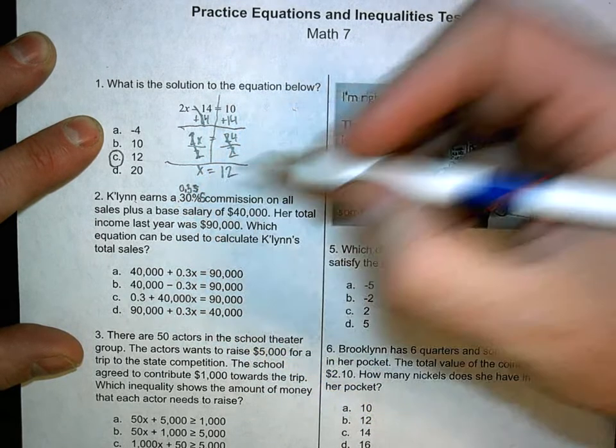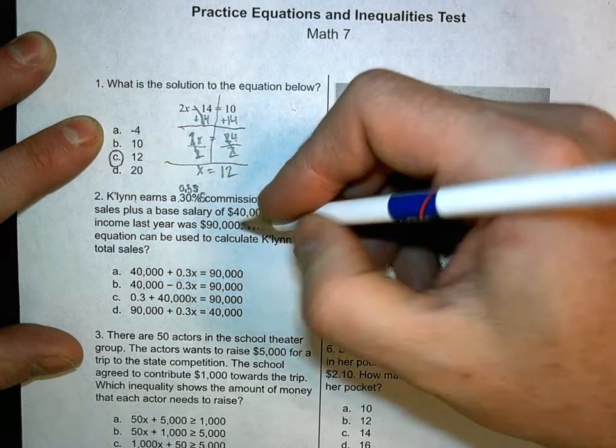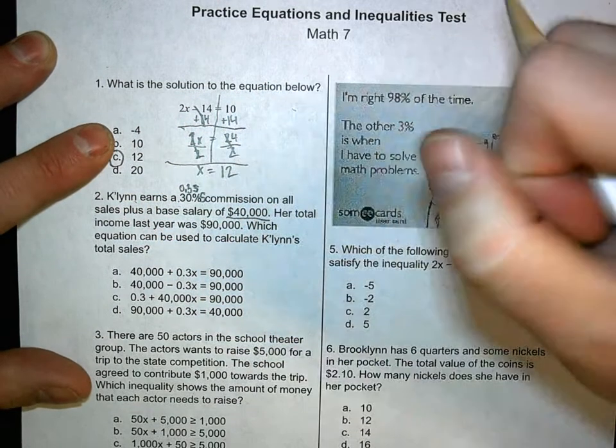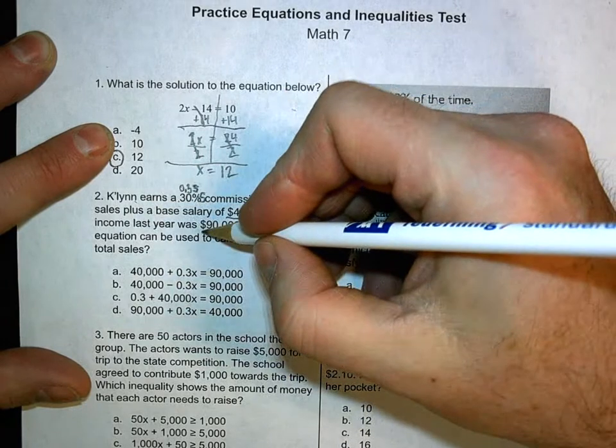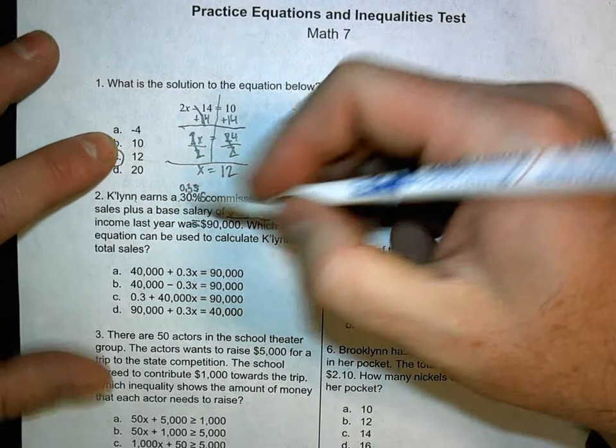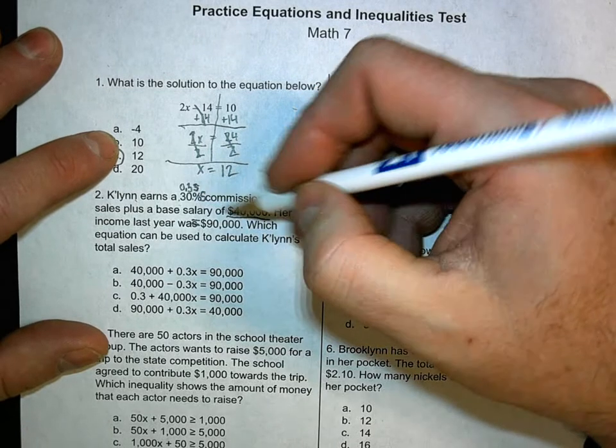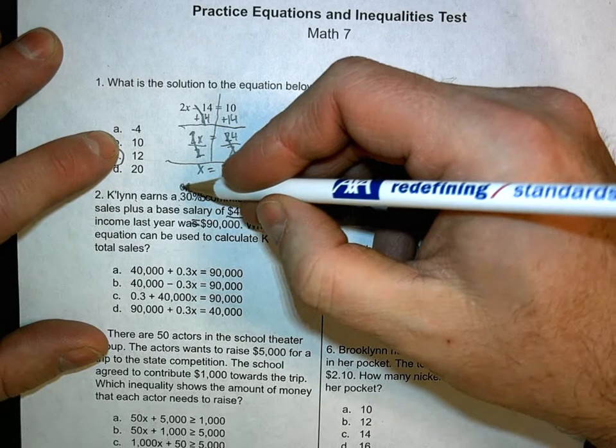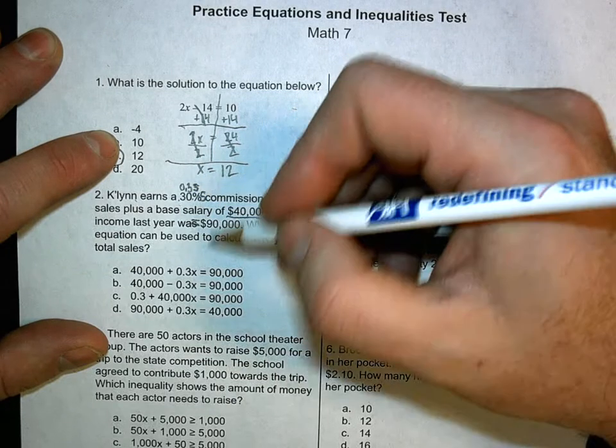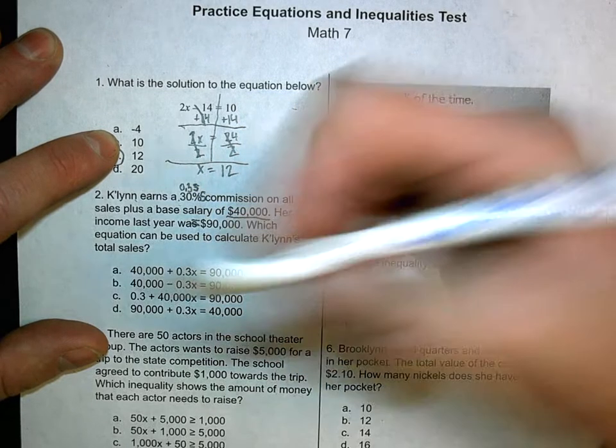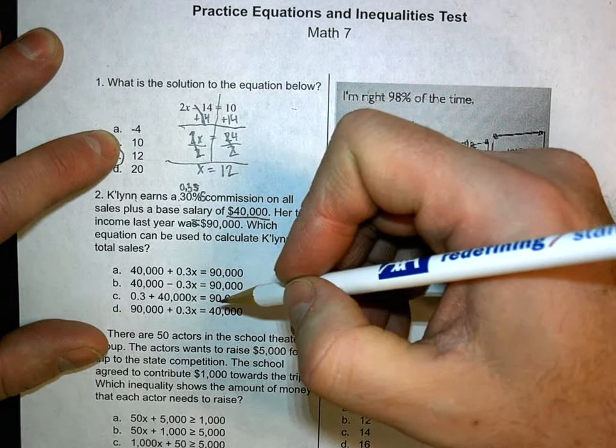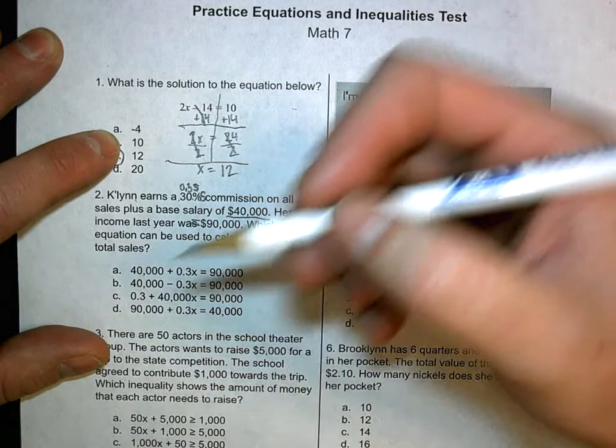And we'll add S here. Plus a base salary. This means this is the amount of money she gets no matter what. That's a fixed amount. Her total income last year was $90,000. So it equaled $90,000. Which equation can be used to calculate? Now we've got all this. Literally, I'm looking at $40,000 plus 0.3, whatever the variable is. They use x down here. So 0.3x equals $90,000. Well, this one works out real well. There's two that would work. Actually, there's only one that works.